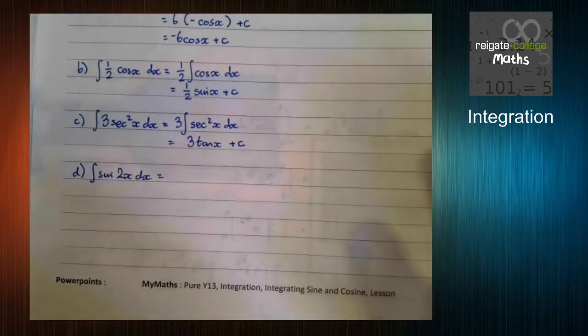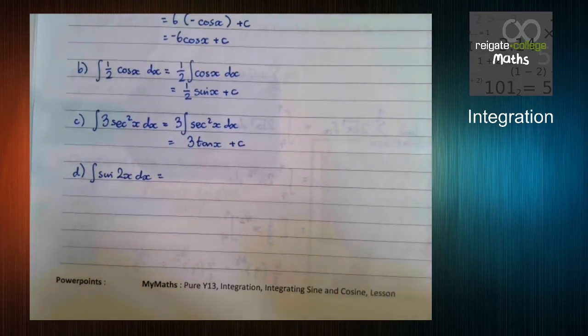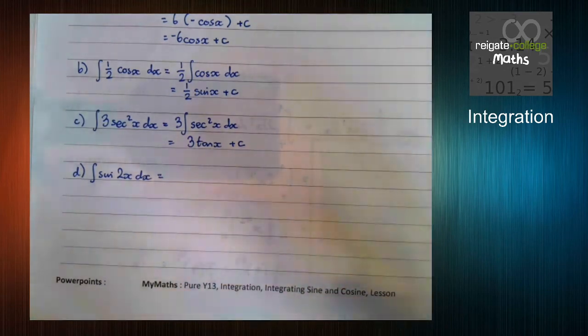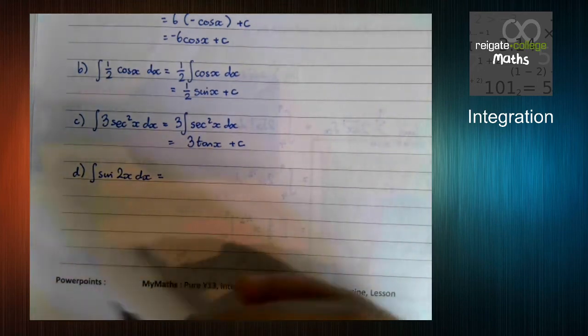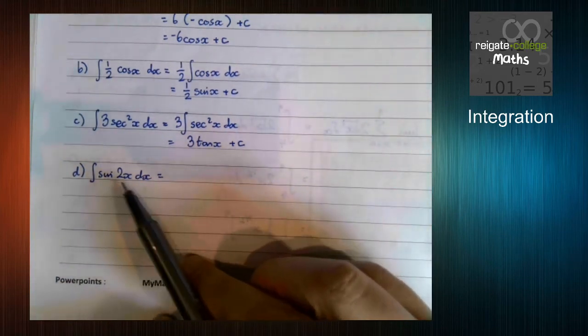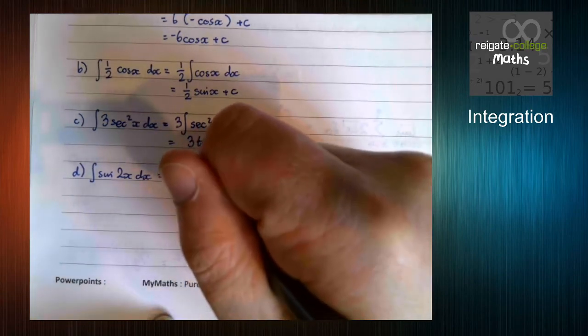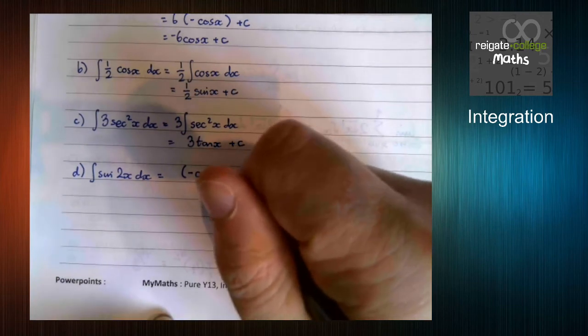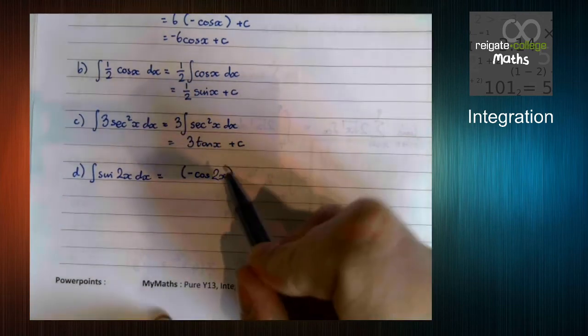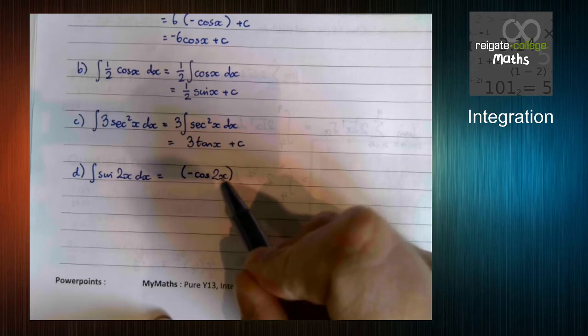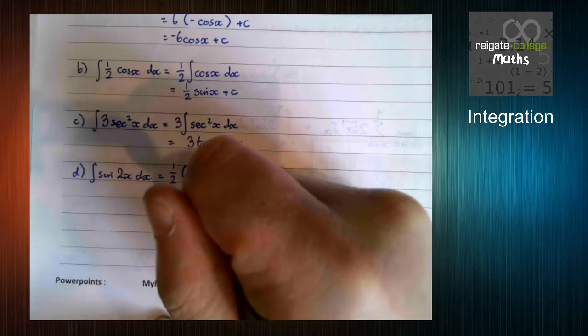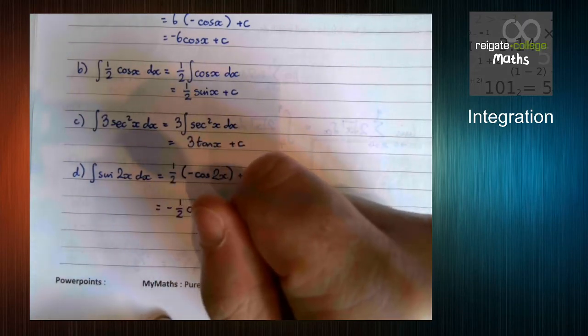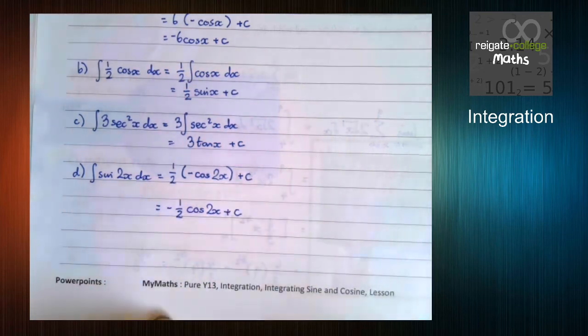This part d works exactly the same as the example we looked at before, except that it's two instead of three. Now for this, you don't need to show all the working that I did for that previous example. All you need to think about is, and the way I kind of process this, is think about it in this way. So sine integrates to minus cos. The 2x always stays there. I then divide by whatever this number is. And plus c on the end. All I then do is tidy it up, and there's my answer.